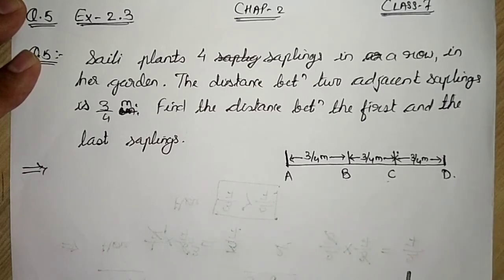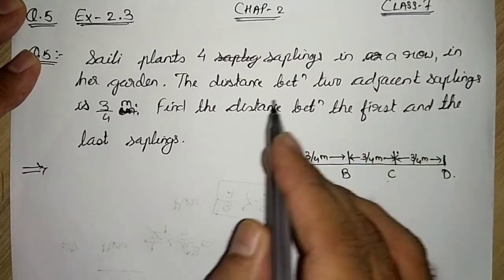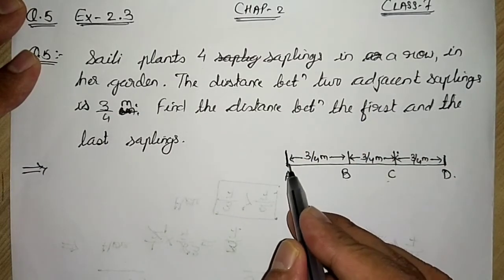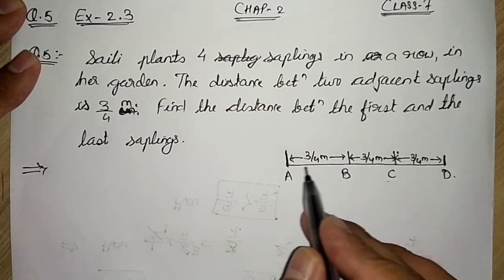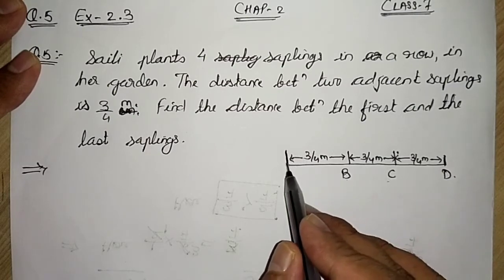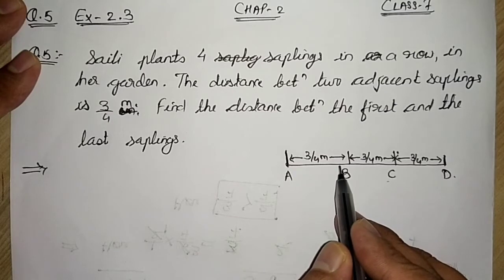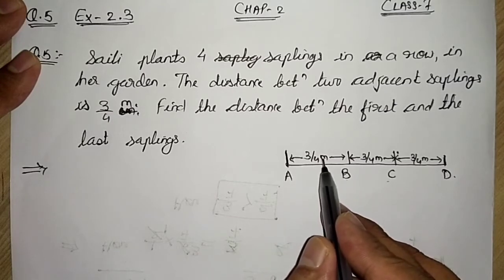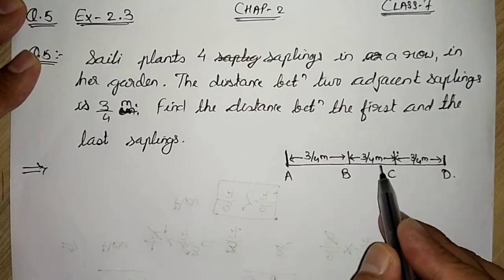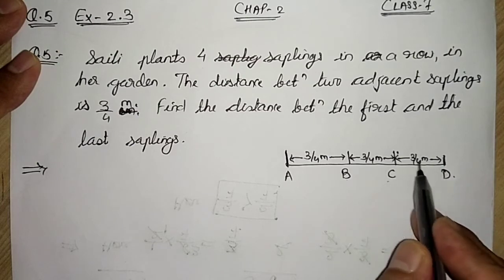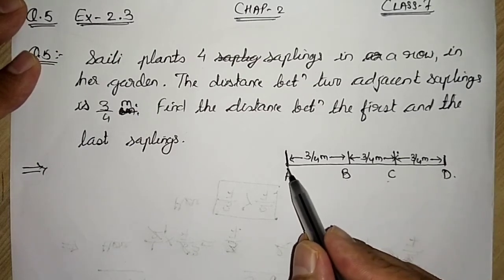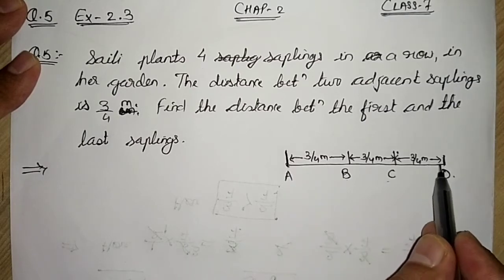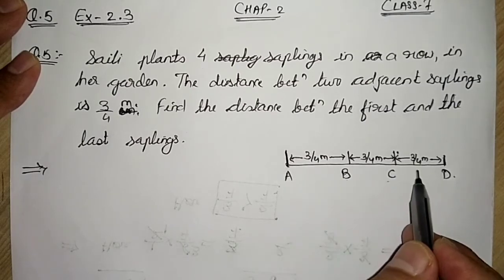In a row, the distance between two adjacent saplings. Adjacent sapling means next sapling, or you can say adjoining saplings. That means A and B are adjacent saplings. So their distance is 3 by 4 meter. B and C, 3 by 4. And C and D, 3 by 4 meter. We have to find the distance between the first and the last. That means this distance we have to find. So let us start.